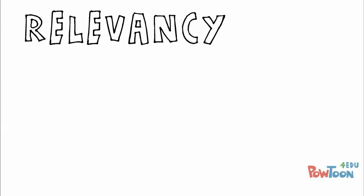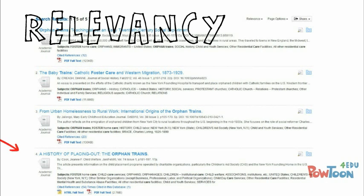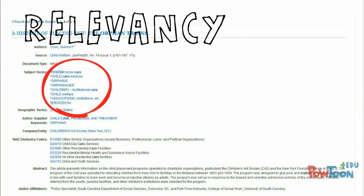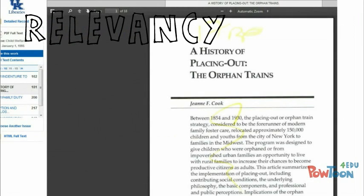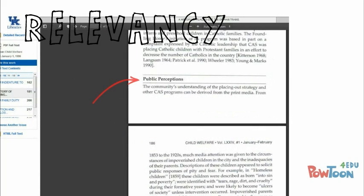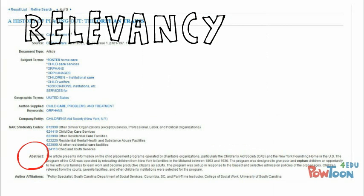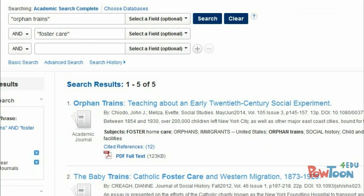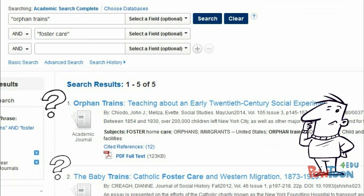And finally, relevancy — how does the information you've found relate to your topic? The title of the article, of course, can help you answer this question, but so can looking at the name of the publication it was published in, the subject terms associated with the article, and then opening the article and skimming the introduction, conclusion, and headings throughout. All of this can help you judge the main ideas of the information and determine how they're related to your topic.